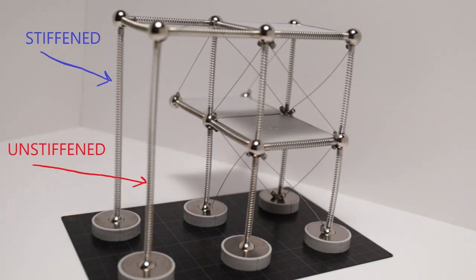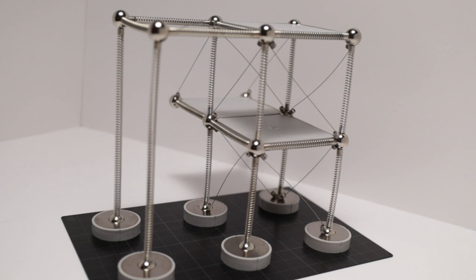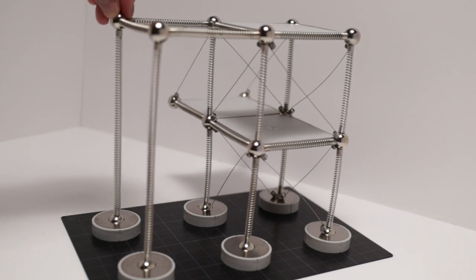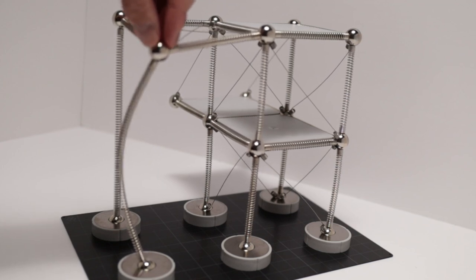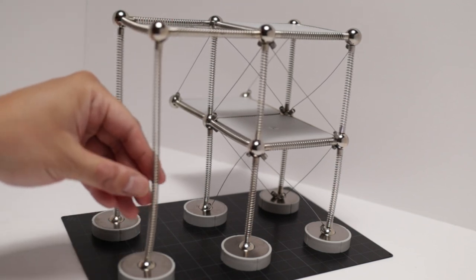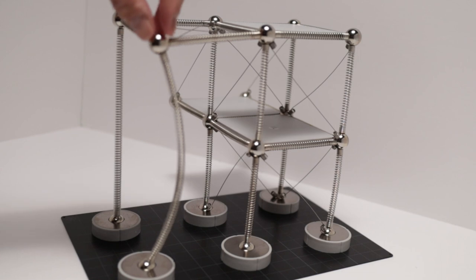So the column in the back is still stiffened and the column closest to us is unstiffened. If I apply an axial or downward force on the stiffened column, nothing really happens, it's still standing up. But if I apply that force on the unstiffened column, then you can clearly see the column buckling or essentially just losing all of its strength and it can buckle in any direction.